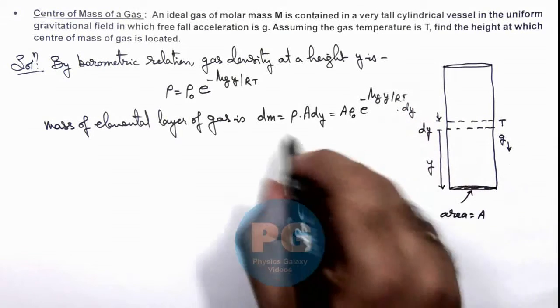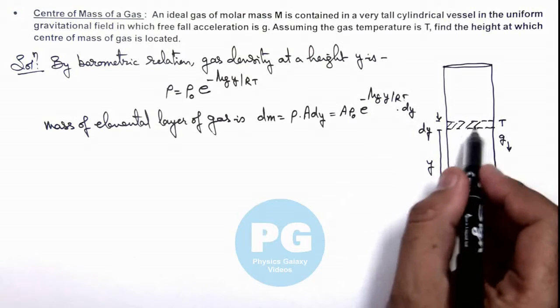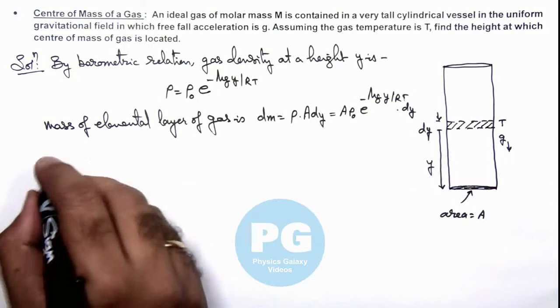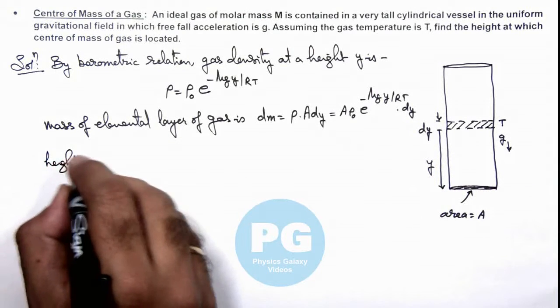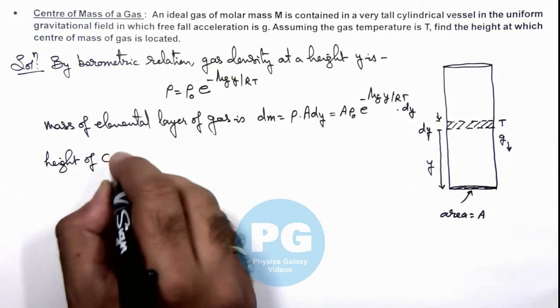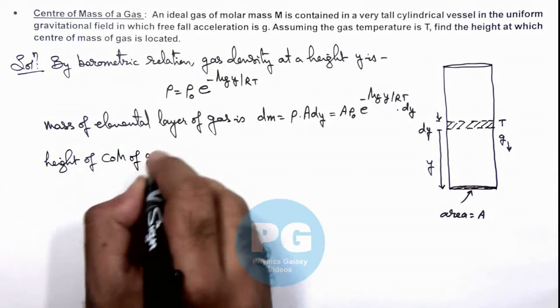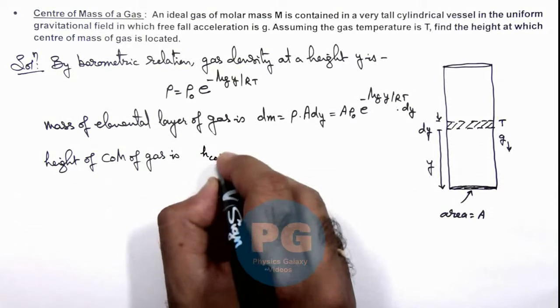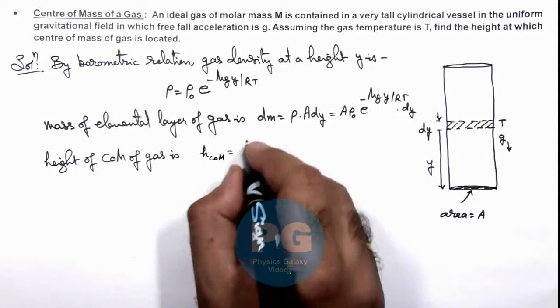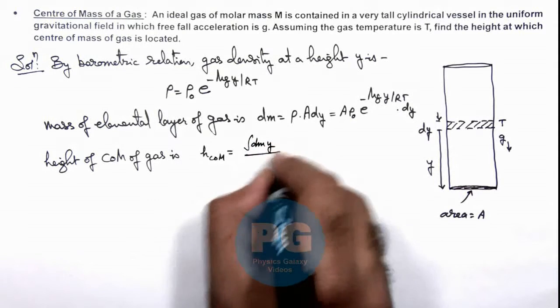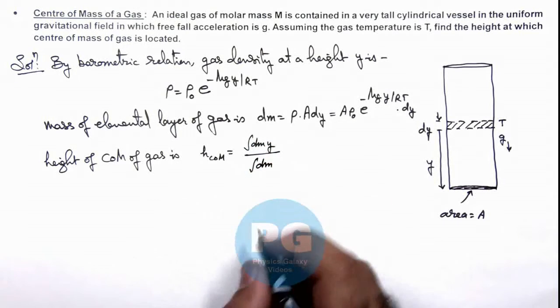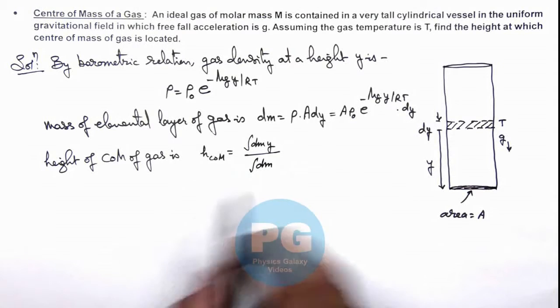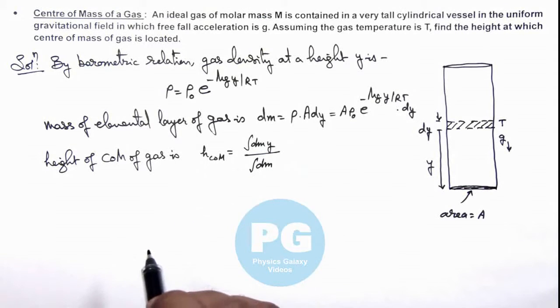So if we are having the mass of this elemental layer, then we can write down the height of center of mass of gas. This relation for center of mass height we can write as integration of dm·y divided by integration of dm. This is the relation we have studied when we studied center of mass.